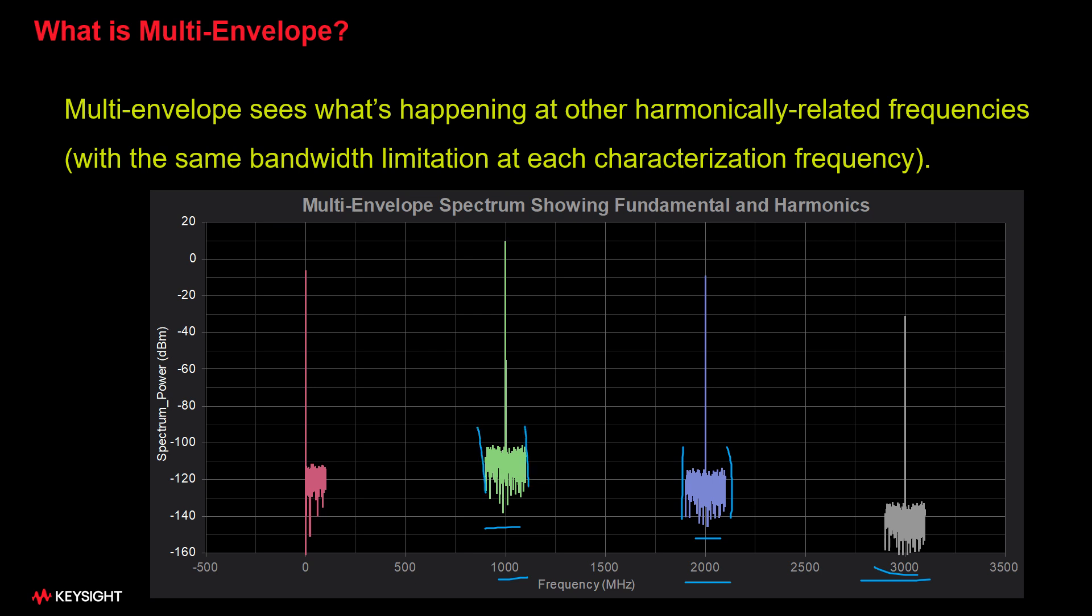Could we keep increasing the sample rate to fill in these blank areas between the harmonics? Yes, absolutely. But then, we're starting to lose our speed advantage again, and the data sets become very large. So, this isn't usually done.